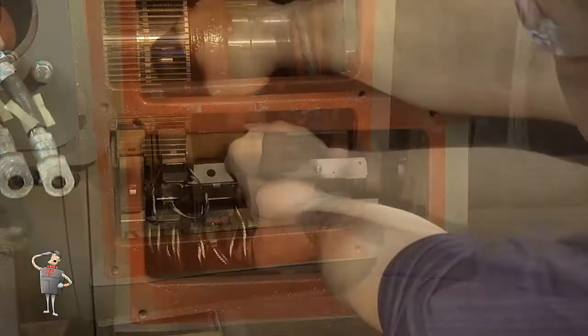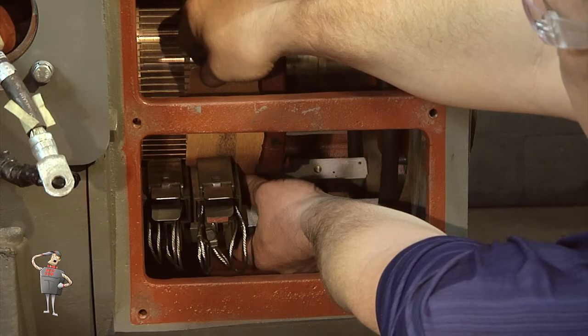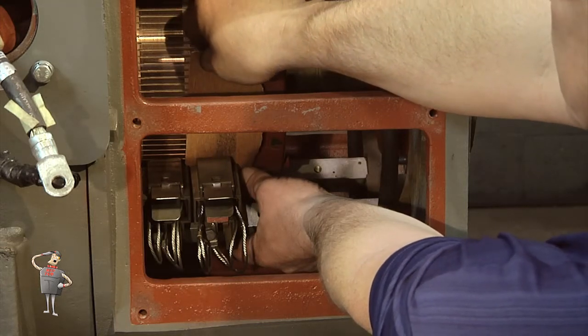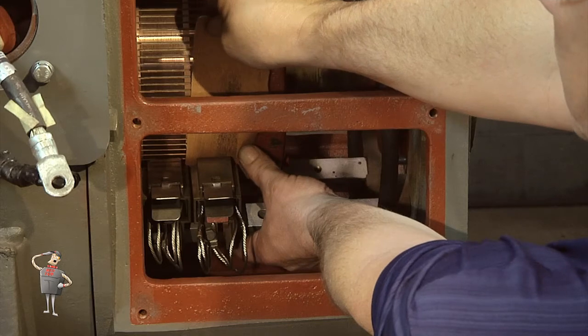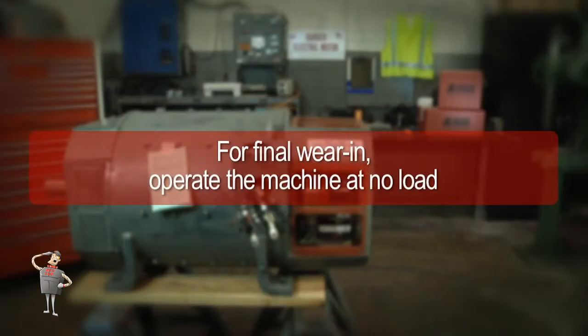And finally, seat in the brushes to the contour of the contact surface using non-metal bearing sandpaper or garnet paper. For final wear in, operate the machine at no load.